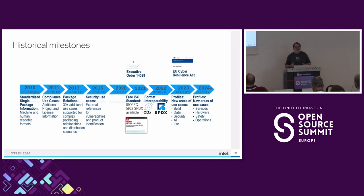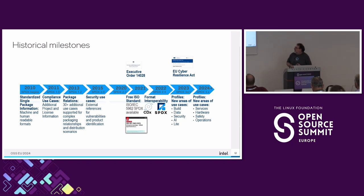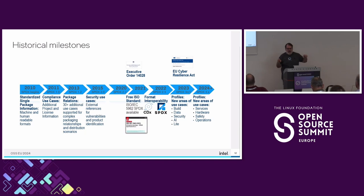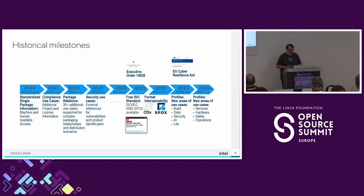The milestones we've reached: we started in autumn 2010. Initially the specification was unstructured, then we kept getting better and better at defining use cases. In 2013 we started introducing the idea of relationships — instead of just a list of things, we could explain how one thing is related to another. We worked a lot on that and reached SPDX 2 in 2015.